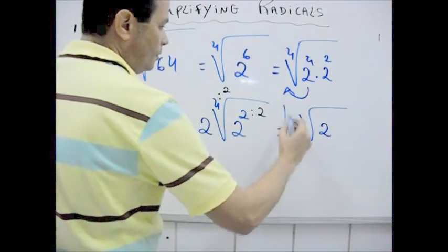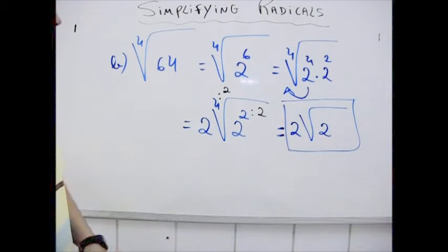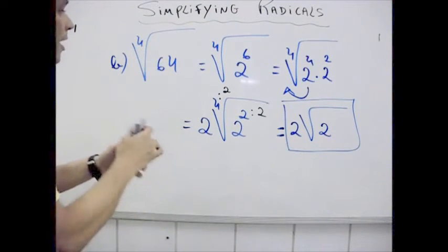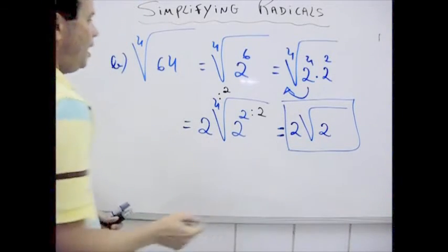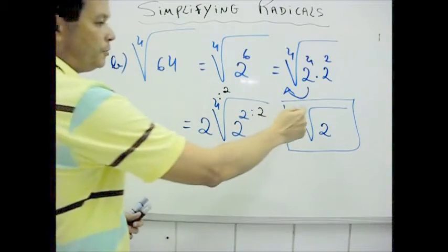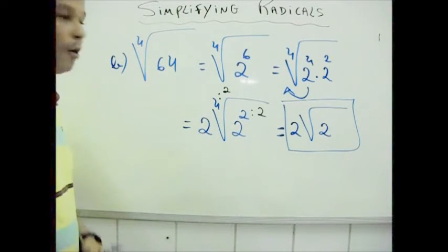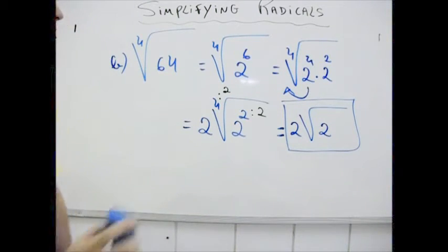Notice that in this case, the radical was reduced and the index was also reduced, alright? Let's go to the last example.